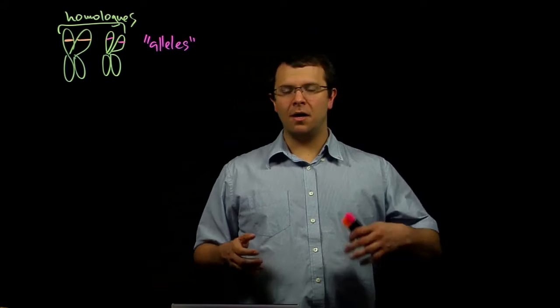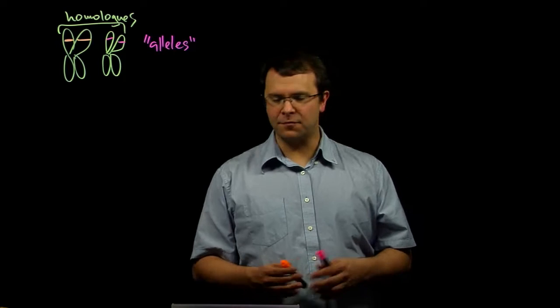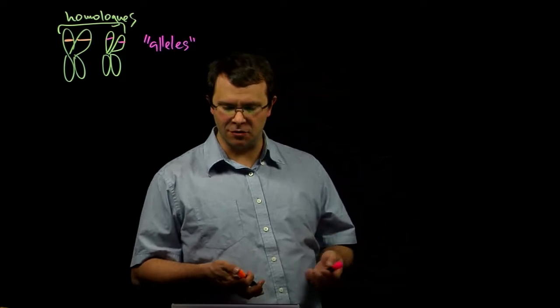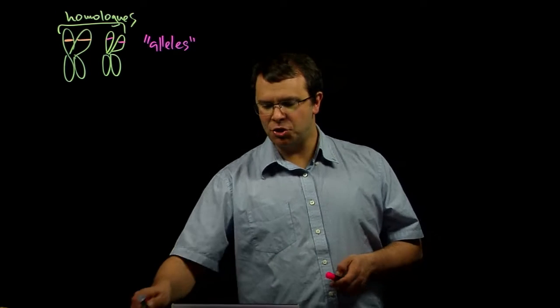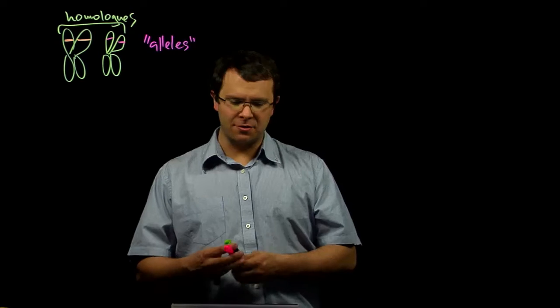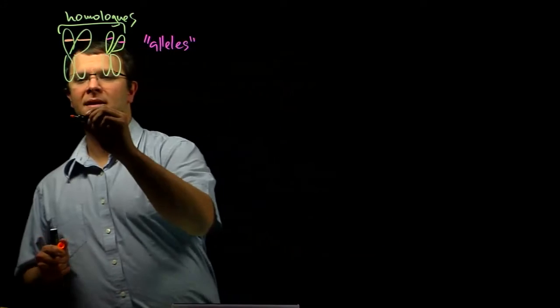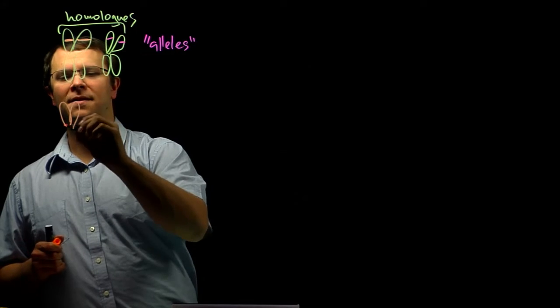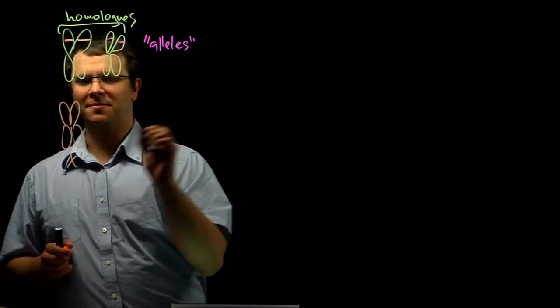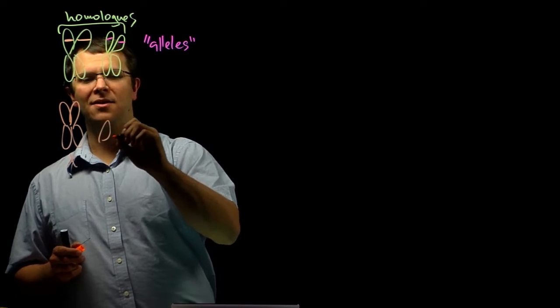So there are 22 homologous pairs of chromosomes in most of the cells in your body. And the two remaining chromosomes, chromosomes 45 and 46, are actually the sex chromosomes. And so in humans, we call those sex chromosomes X and Y.